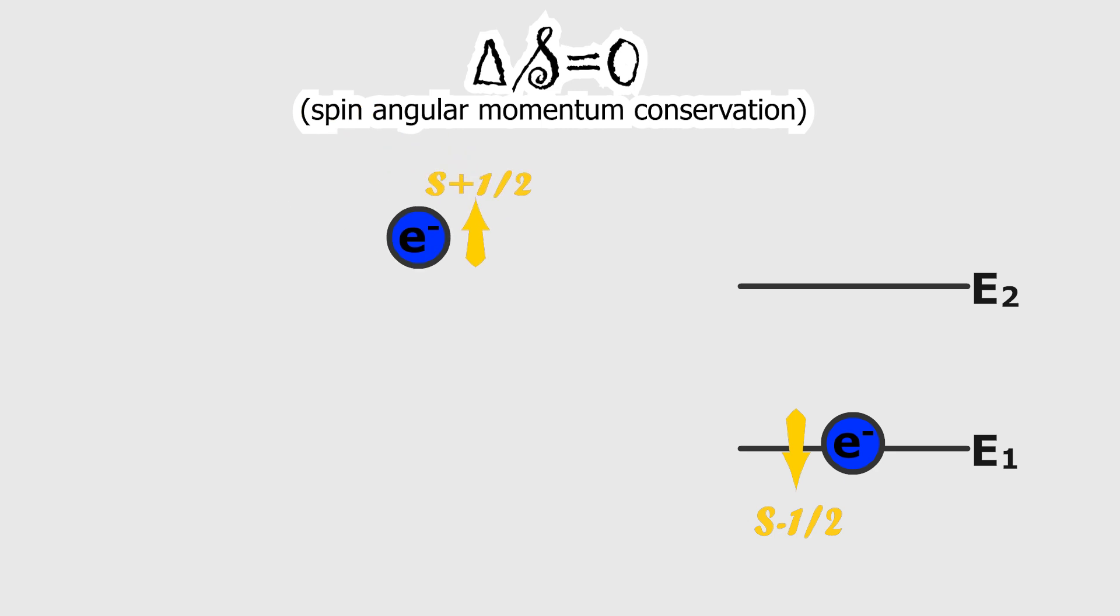If an electron is excited by another electron and the two electrons exchange spins, the total spin change will be zero. Thus, spin changes are more likely to occur when excitation happens via collisions with other electrons.